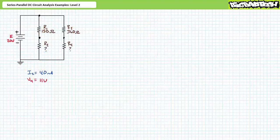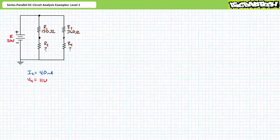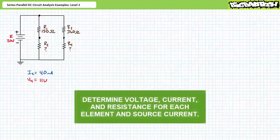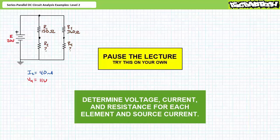Our next illustrated example features a 20 volt source and a series parallel combination of four elements: R1 a 150 ohm resistor, R2 an unknown resistor, R3 a 360 ohm resistor, and R4 an unknown resistor. The only additional information given is that I2 is 40 milliamps and V4 is 11 volts. We're being asked to solve for the voltage drop across each element, the current through each element, the source current, and the unknown resistors R2 and R4. Pause the lecture and try this on your own. If you're tracking, you should have obtained the following results.